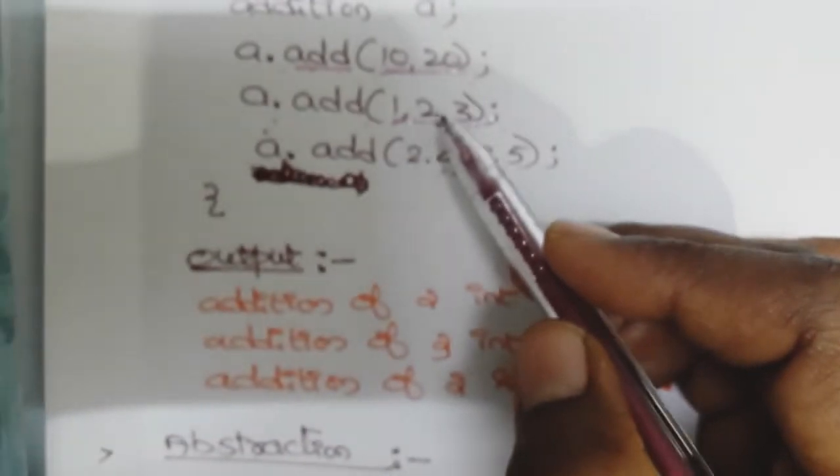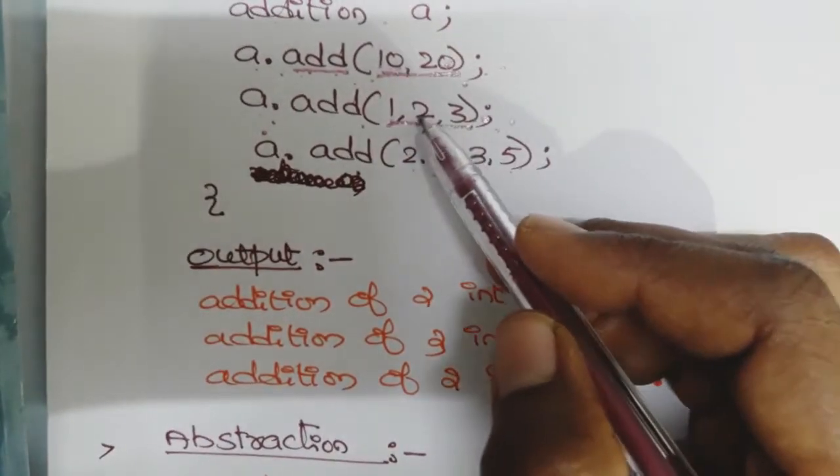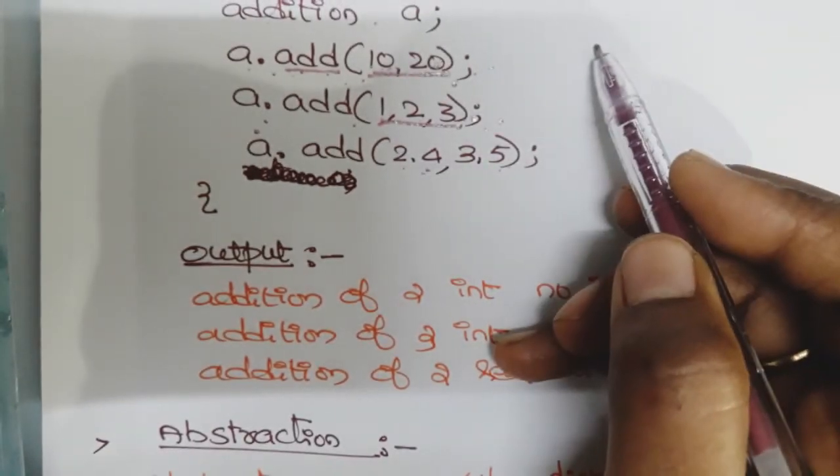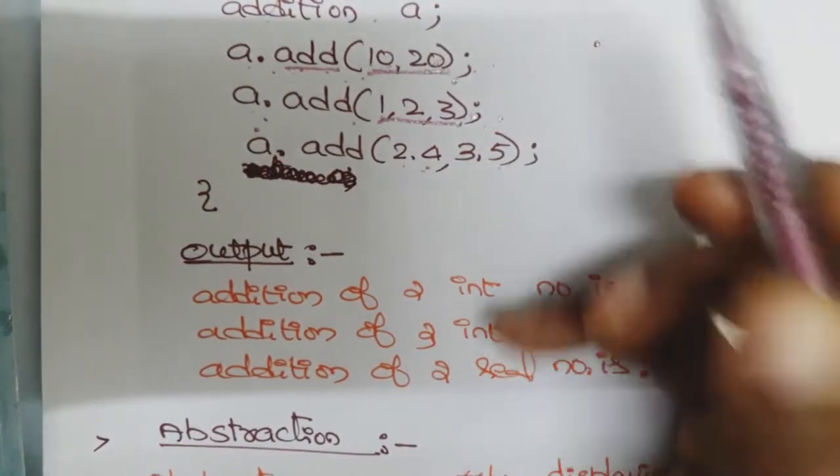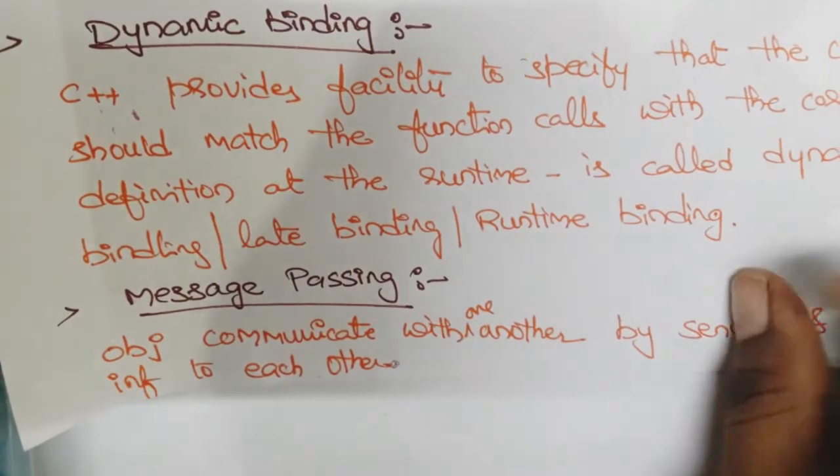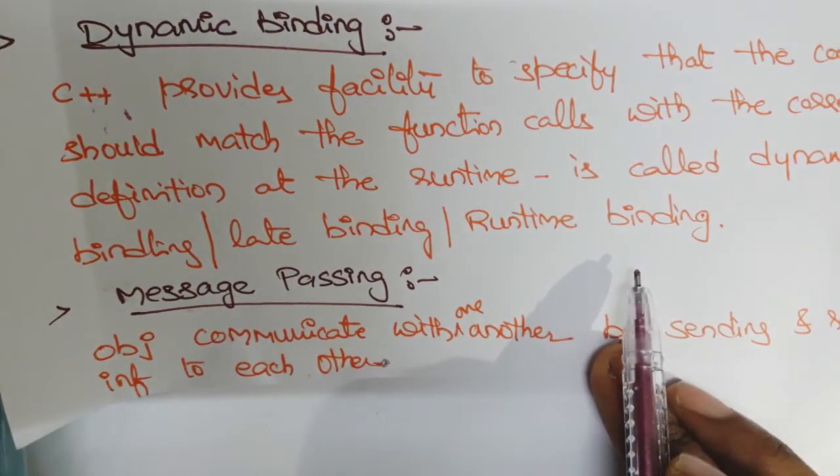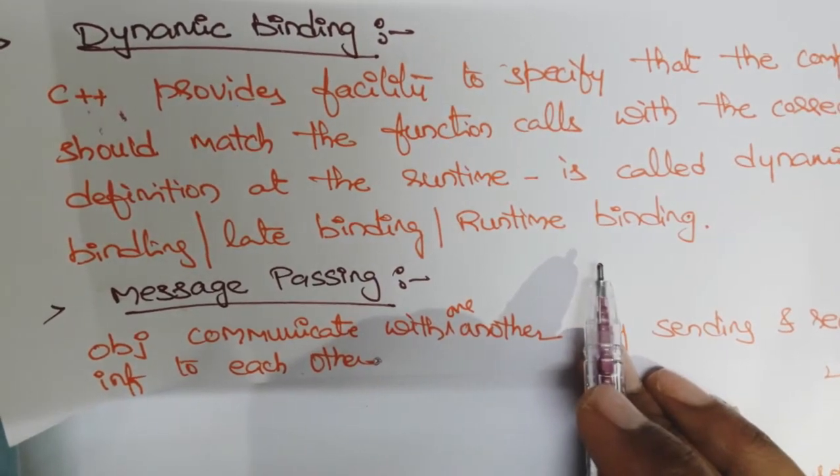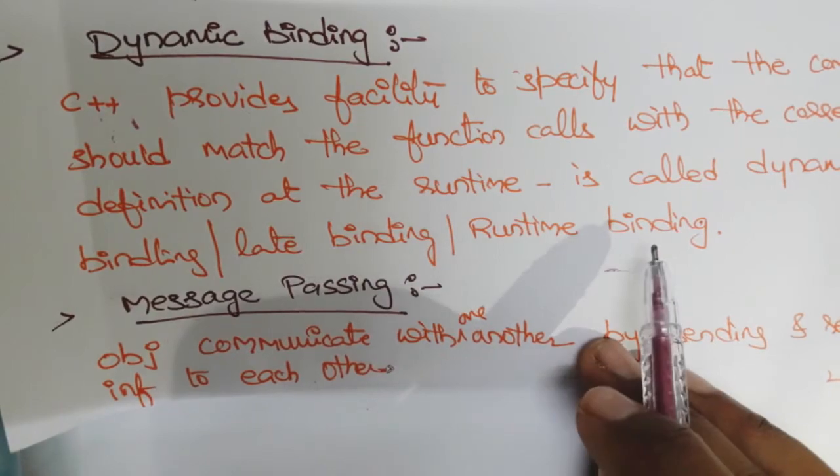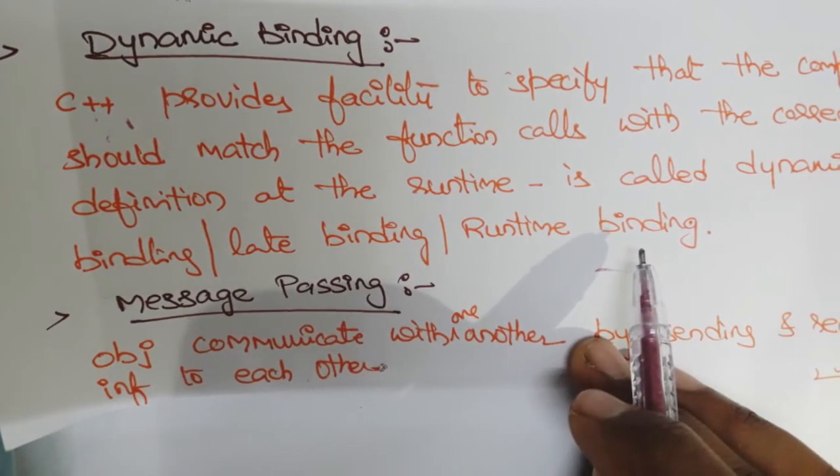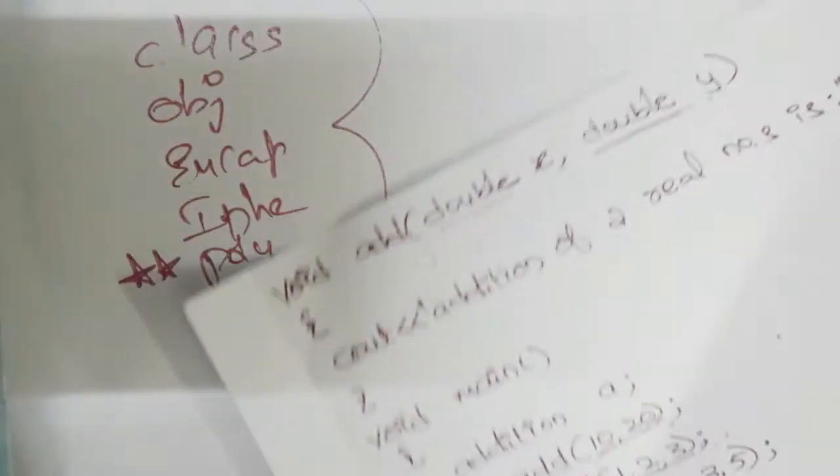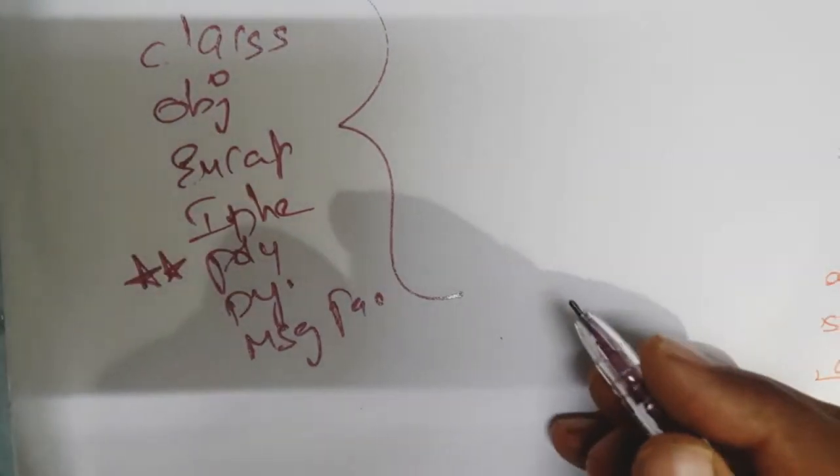Message passing: Objects communicate with one another by sending and receiving information to each other. Objects can communicate with one another by sending and receiving information, which is message passing.